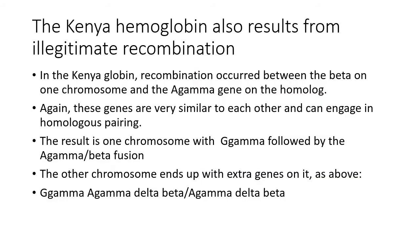Another example of a globin rearrangement resulting from an illegitimate exchange is the Kenya hemoglobin — a slightly different recombination event but the same idea. One chromatid gained information and the other one lost information.